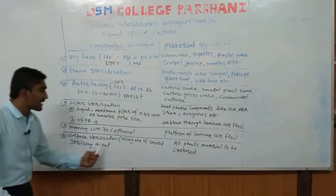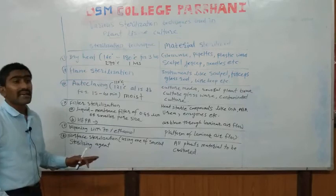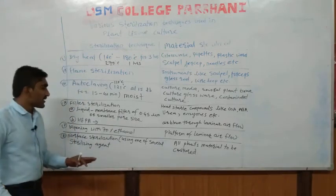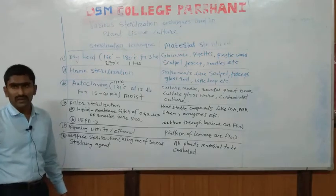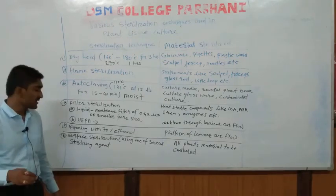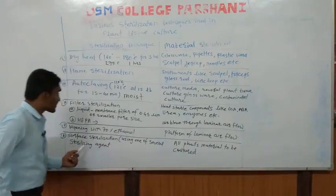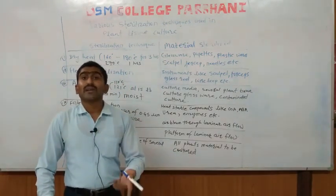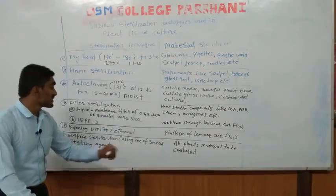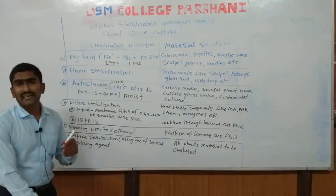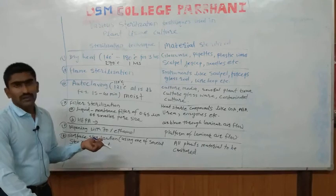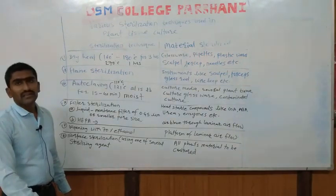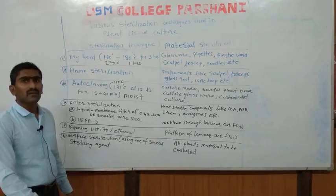Another technique is surface sterilization using various sterilizing agents such as disinfectant solutions and detergent solutions, which can be used to sterilize any surface we want to work on. All plant material to be cultured can be surface-sterilized using agents like detergents, antibacterial solution, and hypochlorite solution. That covers all the sterilization techniques — if you have any questions, mention them in the comment box. Thank you.